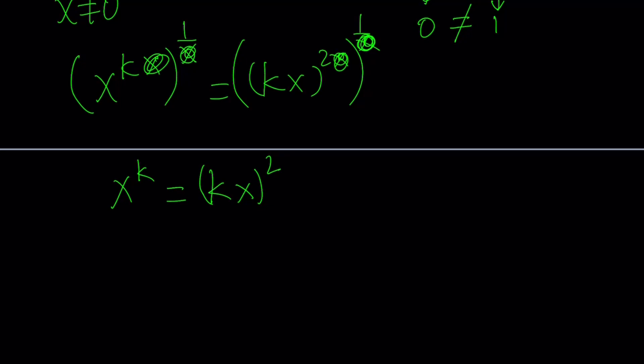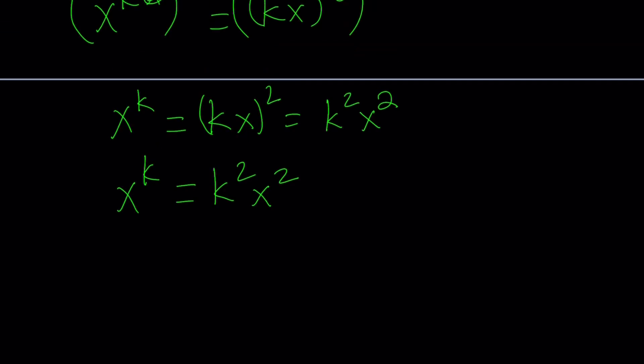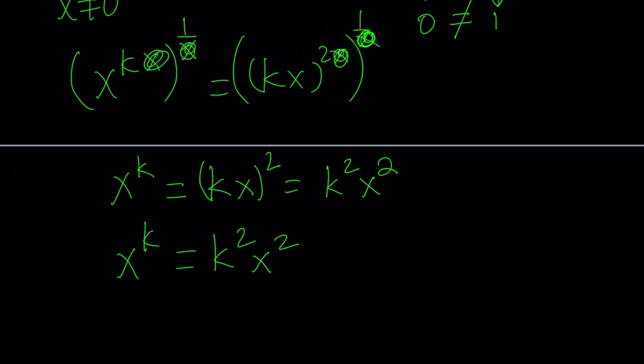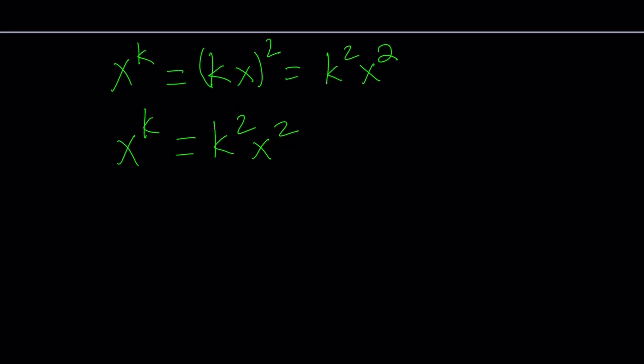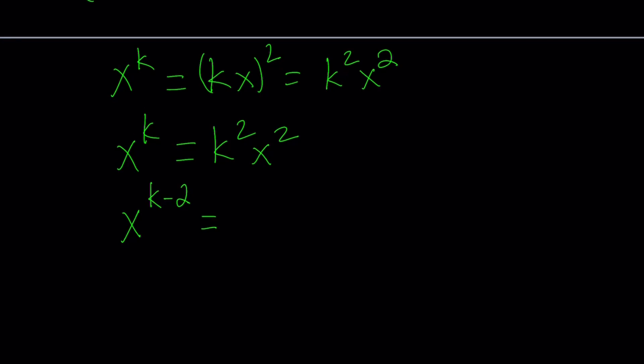What is kx to the second power equal to? It is equal to k squared x squared. Now we got x to the k equals k squared x squared. We assume that k does not equal zero, so we're looking for non-zero solutions for x. What do we do from here? We want to solve for x at this point. How do you solve for x? Let's put all the x terms on the same side. In other words, divide both sides by x squared.